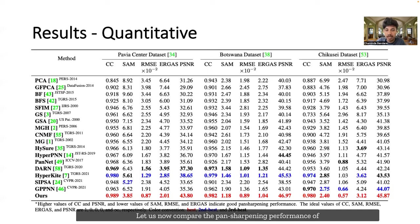Let us now compare the pan-sharpening performance of our hyper-transformer with existing state-of-the-art methods. We use three publicly available and widely used HSI datasets for our experiments. We compare our model with both classical and convnet-based state-of-the-art methods. As shown in the table, our hyper-transformer significantly outperforms both classical and convnet-based state-of-the-art methods on all three datasets.